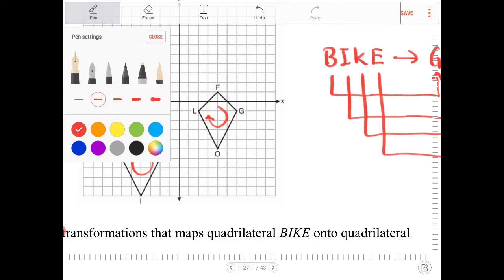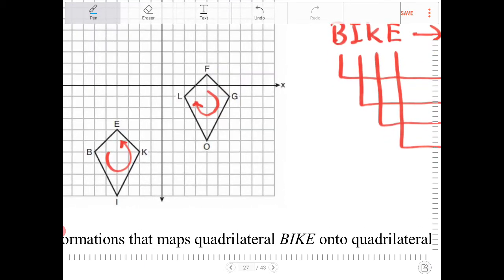So, I am going to draw in, using a different color here, I'm going to reflect B-I-K-E over the Y-axis. And if I do, I'll end up with a shape that looks like this.